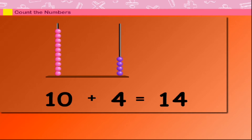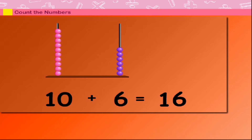10 plus 5 is equal to 15. 10 plus 6 is equal to 16. 10 plus 7 is equal to 17.